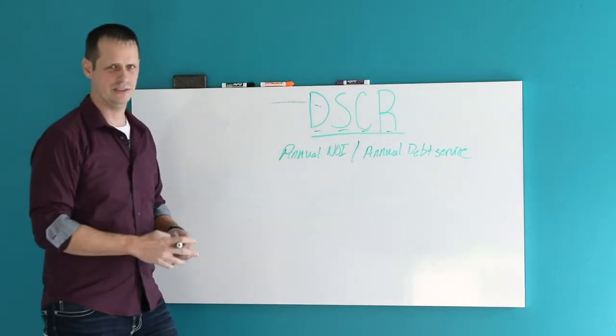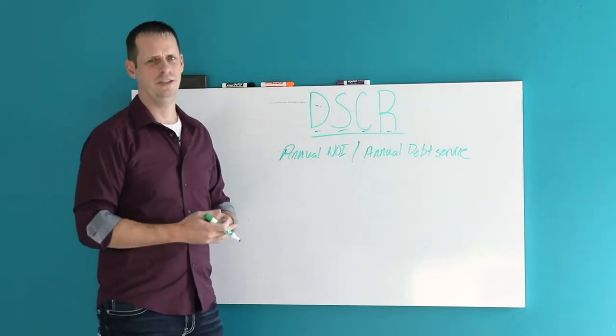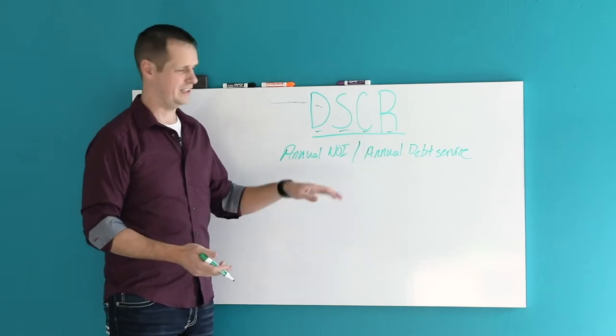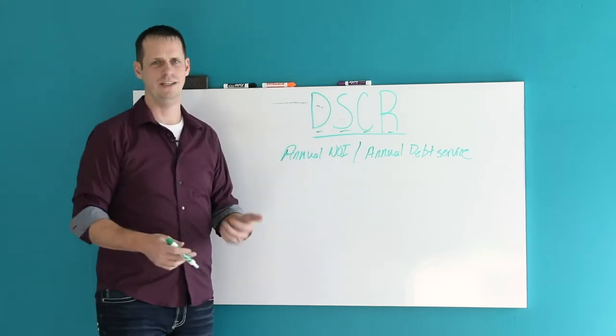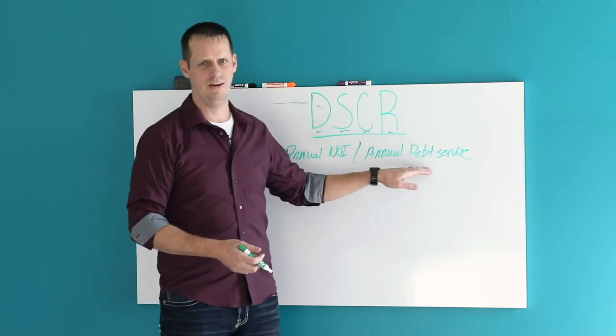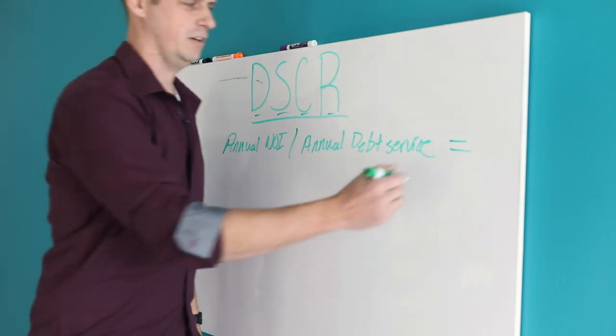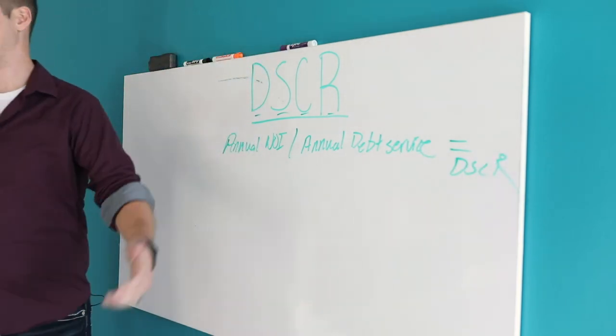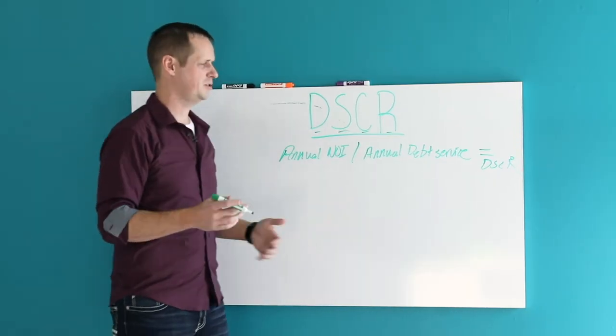So what is debt service? Well, most of the time if you're buying real estate and you have leverage, you're going to have a mortgage. That's going to be your debt and the debt service is how much that debt costs you on a yearly basis. So your annual NOI divided by your annual debt service equals DSCR.